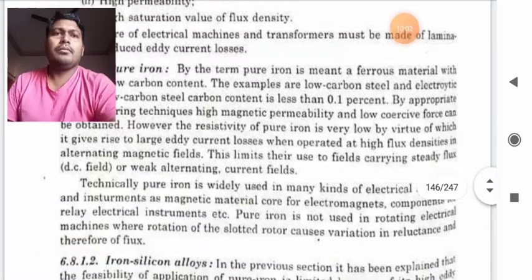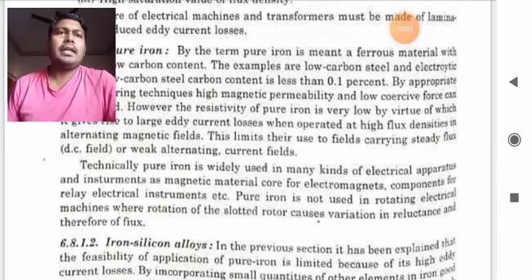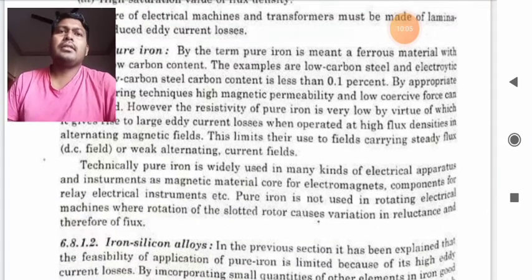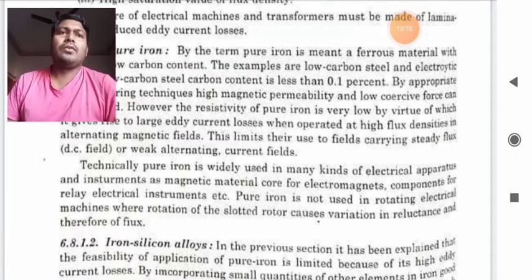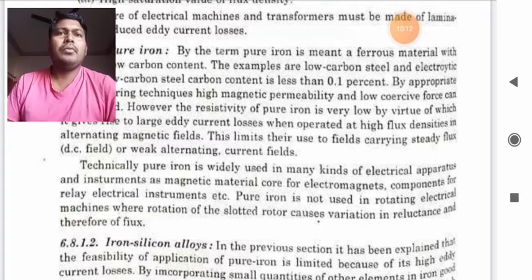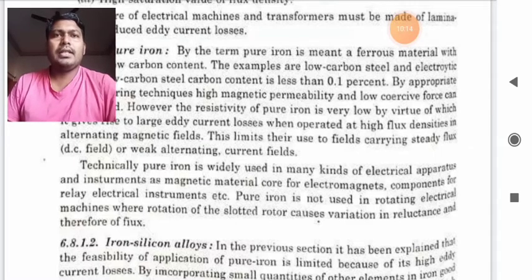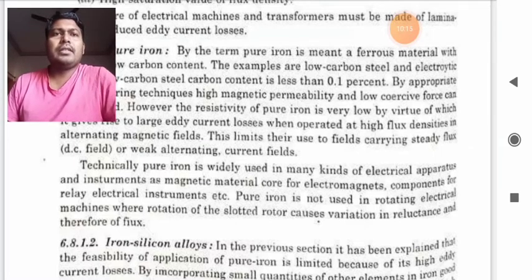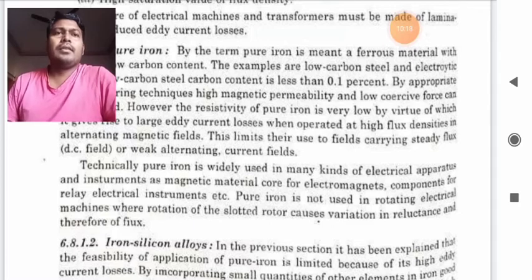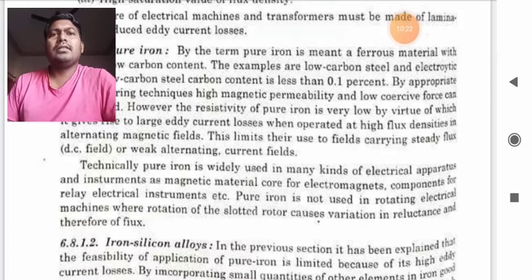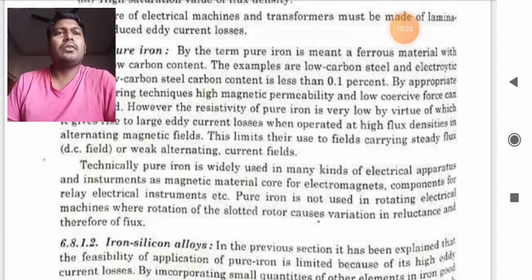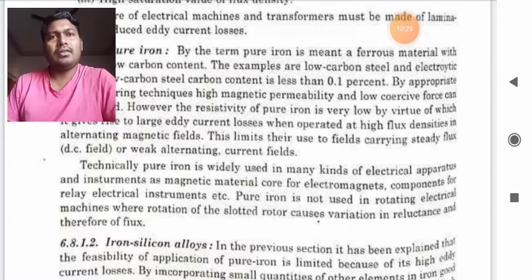Technically, pure iron is widely used in many kinds of electrical apparatus and instruments as magnetic materials, core of electromagnets, components for relay, electrical instruments, etc. Pure iron is not used in rotating electrical machines where rotation of the slotted rotor causes variation in reluctance and therefore flux.